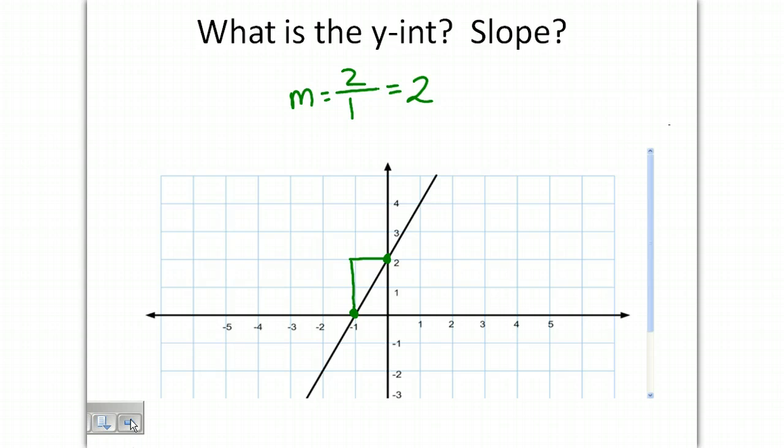It doesn't matter what points you choose. If we choose this point and this point, we see that our rise is 6 and our run is 3. 6 divided by 3 is also 2. So our slope is 2.